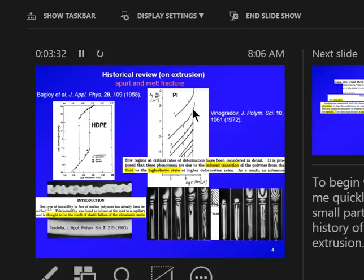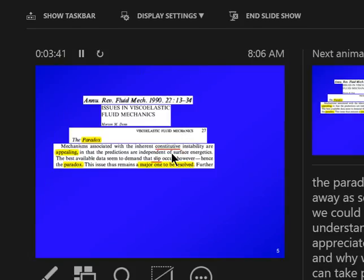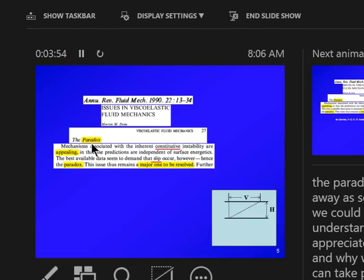Then Vinogradov grabbed some polyisoprene and did a lot of work showing spurt-like behavior, but their conclusion was they think this was a fluid to solid transition. By the time when I started to learn about the field, it was presented as a paradox, the spurt behavior, and it was unclear.